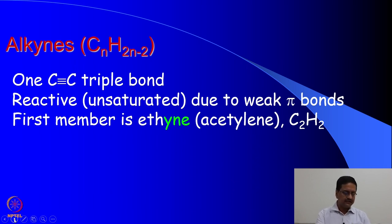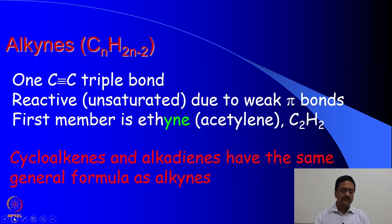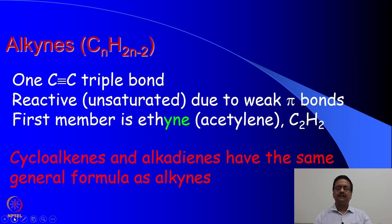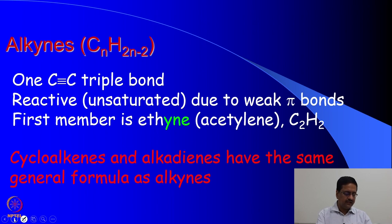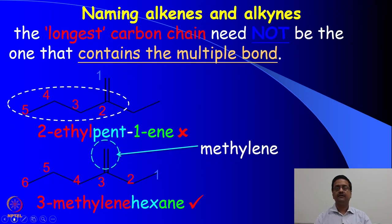There may be a large number of different compounds which can have a C-C triple bond. You may have noticed that cycloalkenes and alkadienes have the same general formula as alkynes. We will continue understanding the names of alkynes and alkadienes in these upcoming slides.